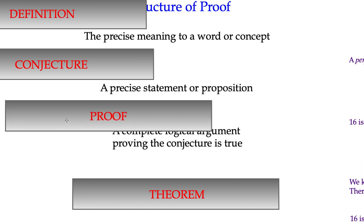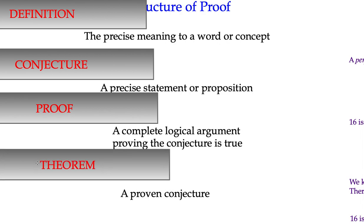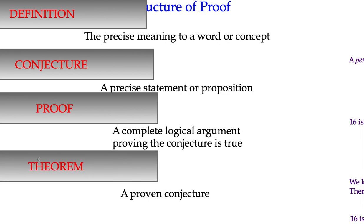Proof is our logical argument proving the conjecture is true, and the theorem, it's a conjecture that is actually shown true. So what might that look like?